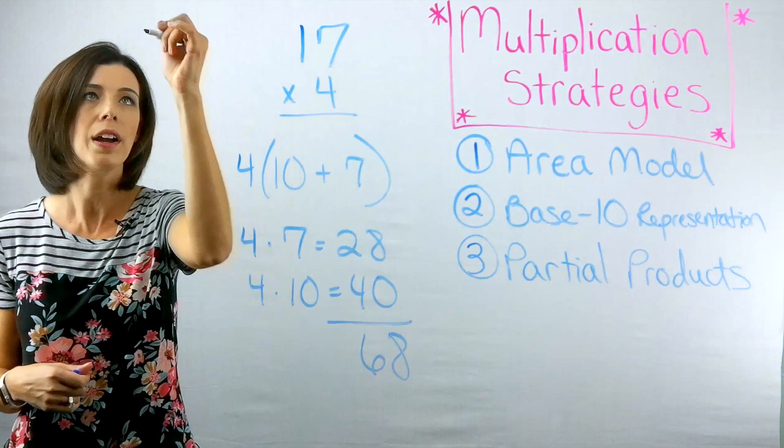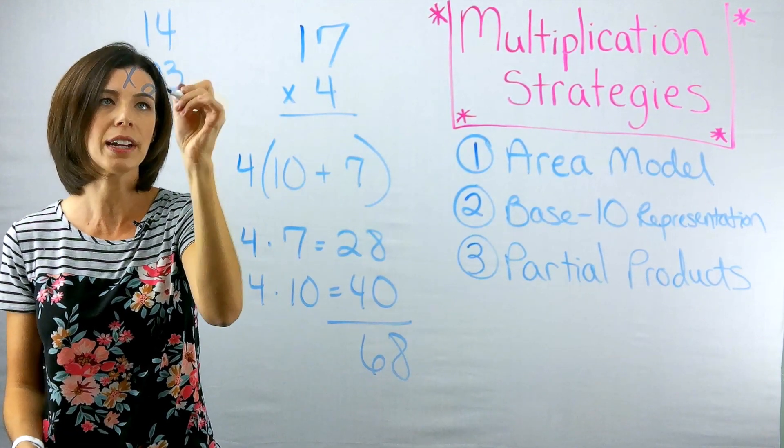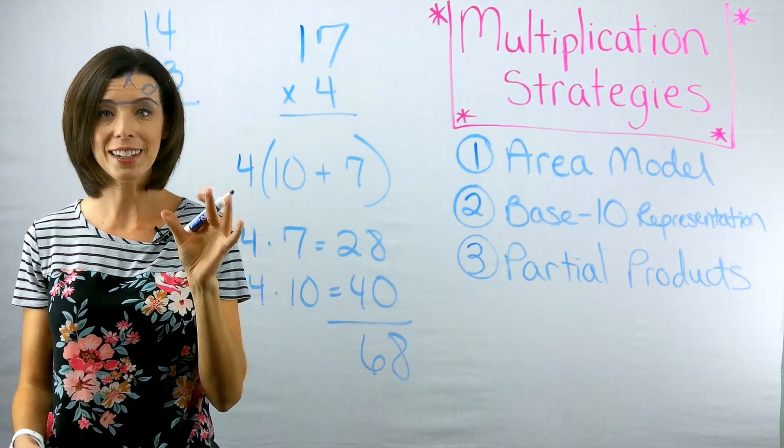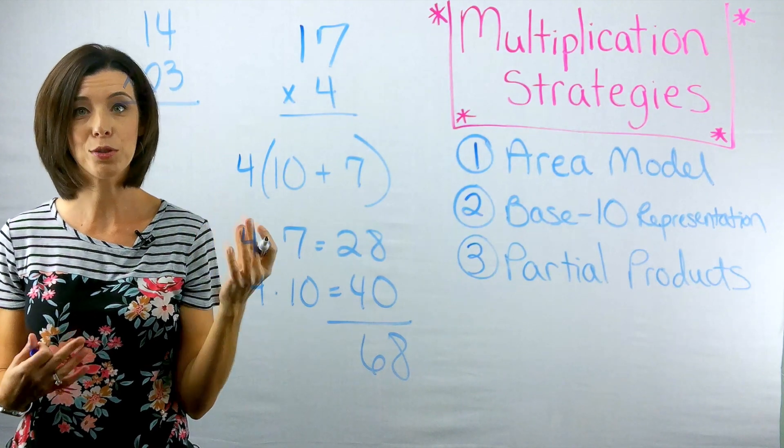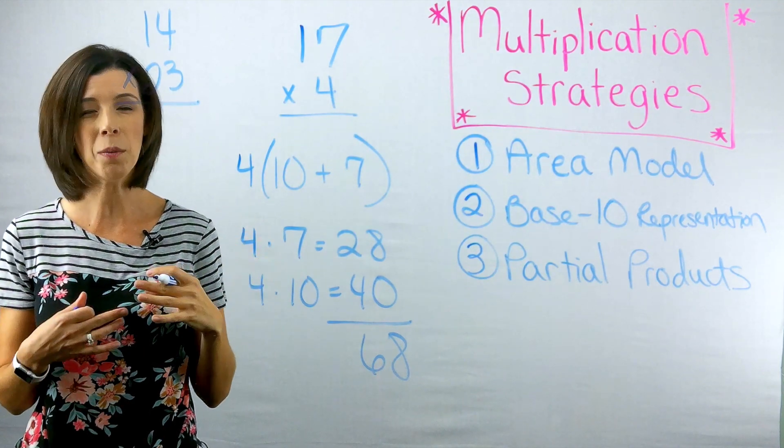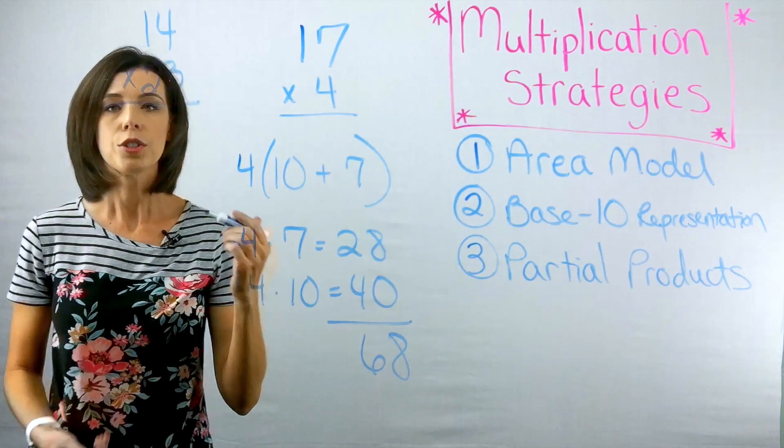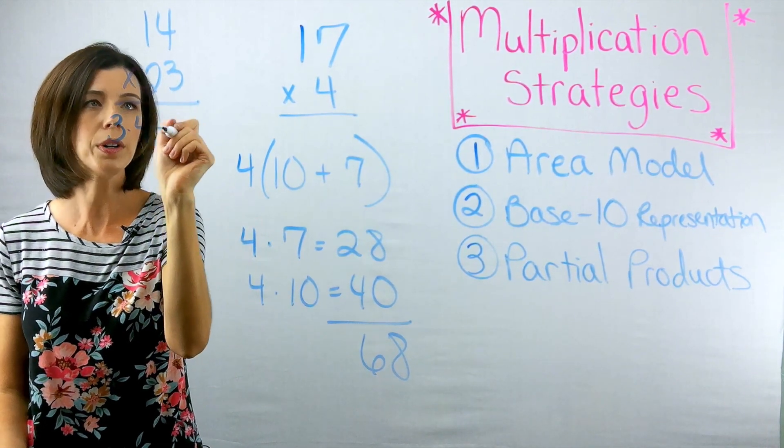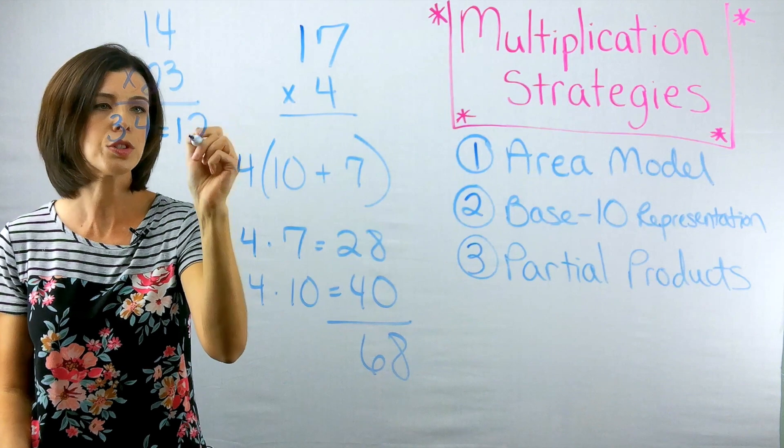Let me show you one more. Again, let's go back to our 14 times 23. This is assuming that I really understand the multiplication algorithm, which really is using partial products, but it's almost a shortcut to it. So I know that I'm going to have 3 times 4. Again, 1 times 1, which equals 12.